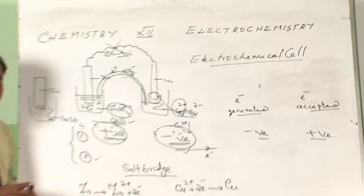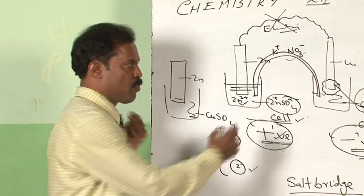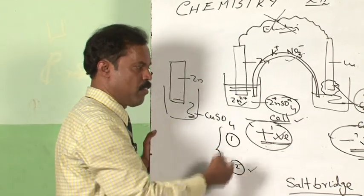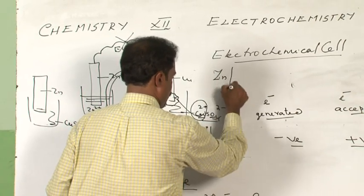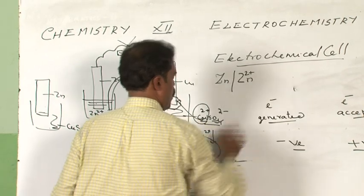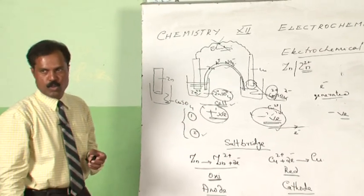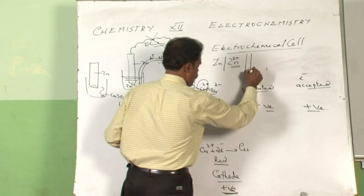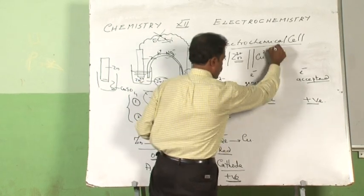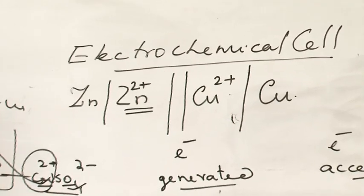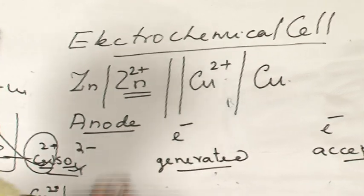The question is: how do we represent a cell? You cannot always draw the electrodes like this to represent a cell. To represent a cell, you always start with the electrode that is the anode, then put a slash which represents the interface. The electrode is in zinc sulfate solution, which means the zinc rod is in contact with Zn²⁺ ions. After this, there is a salt bridge which is represented with a double slash. The salt bridge is in contact with Cu²⁺ ions, which is again in contact with copper metal. The convention is to always represent the cell with the anode on the left-hand side and the cathode on the right-hand side.